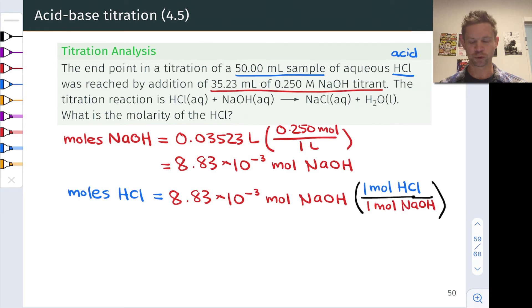You can imagine this as we're taking the 8.83 × 10⁻³ moles of NaOH and multiplying by the molar ratio, 1 mole of HCl for every mole of NaOH involved in the reaction. This is of course numerically equal to the moles of NaOH. So this is our number of moles of HCl that were in the original analyte solution.